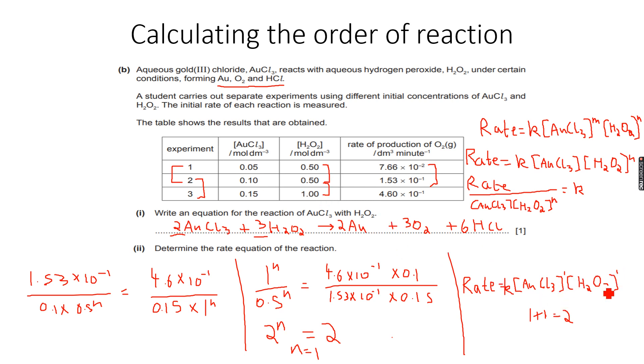What we calculated over here was 1. So for this reaction, in which AuCl3 reacts with H2O2 to form gold, oxygen, and hydrogen chloride, the rate equation is this and it will always stay this for this particular reaction.